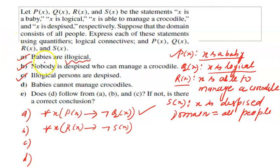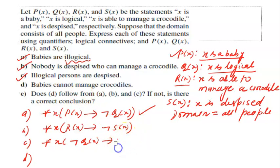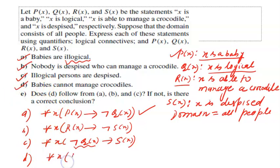Third statement: illogical persons are despised. For all x, negation of Q(x) implies S(x). Finally, babies cannot manage a crocodile. For all x, P(x) implies negation of R(x). In all these problems we are using universal quantification.